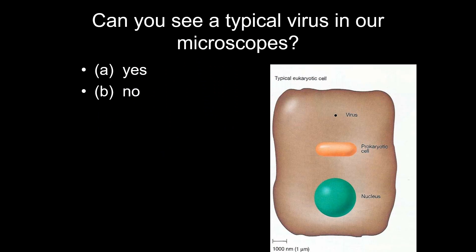Can you see a typical virus under a microscope? No — they are tinier than even prokaryotic cells. This picture shows the size comparison between all cell types: the eukaryotic cell is the big cell with a nucleus, the prokaryotic cell is smaller inside that, and the virus is this little bitty speck. It's super teeny tiny.